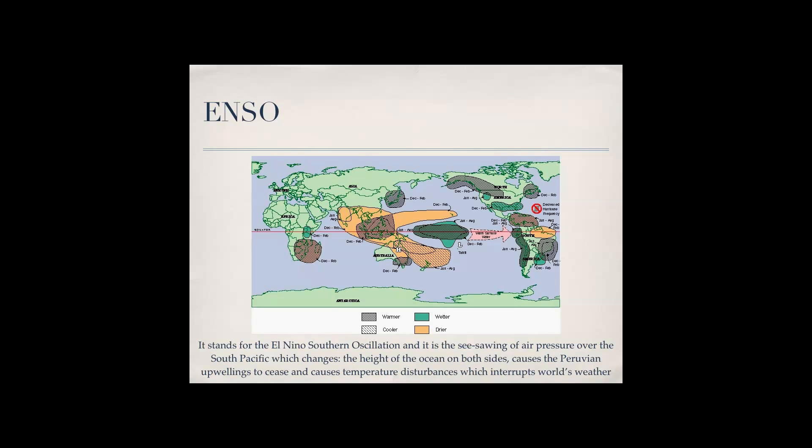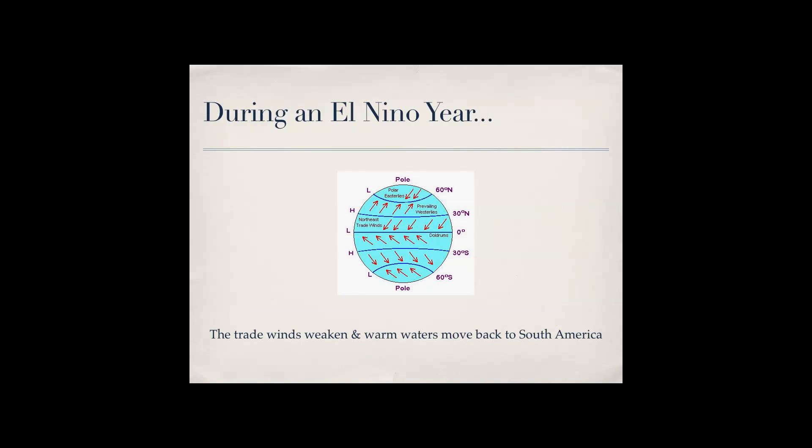In an El Niño year it all kind of settles out and that changes the weather and the trade winds and all this kind of stuff. During an El Niño year the trade winds weaken and warm waters move back to South America and that causes temperature disturbances.